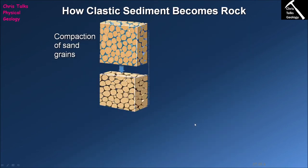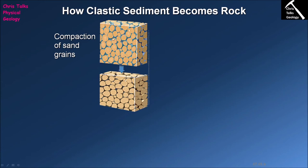So how do we take a sediment and turn it into a rock? The first step is compaction. A layer of sediment is deposited, and then over time more layers of sediment build up on top of it. The weight of those new layers squishes and compacts the first layer, pushing the clasts closer together. This reduces the pore space between clasts, which is normally filled by water, and that water is squeezed out — a bit like squeezing a sponge.